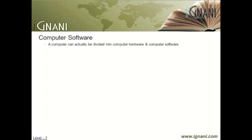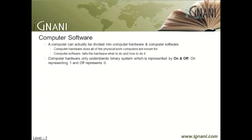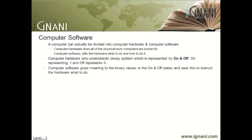In the same way, having software is like having a driver to make the hardware do its job. In other words, a computer can be divided into two parts: the first part being computer hardware, which does all of the physical work computers are known for, while the second part, computer software, tells the hardware what to do and how to do it. Computer hardware, being a machine, only understands two basic concepts: on and off. This on-and-off concept is called the binary system, with on representing one and off representing zero. Computer software gives meaning to these binary values and uses them to instruct the hardware what to do.